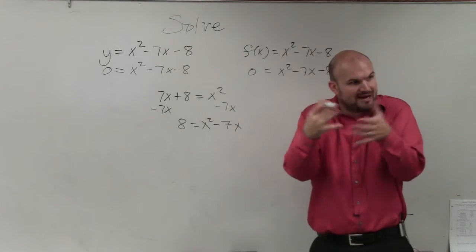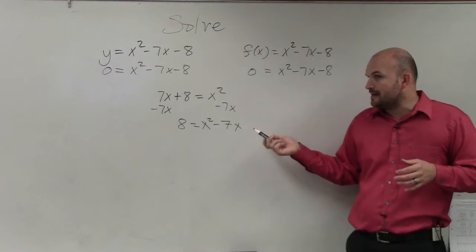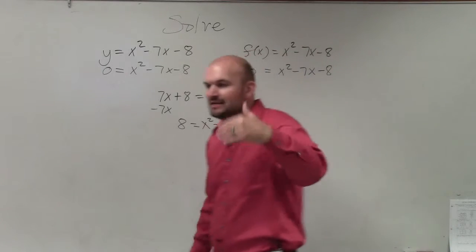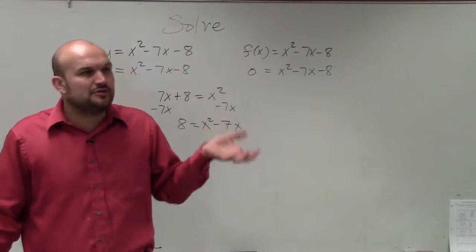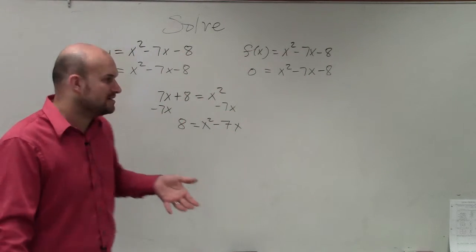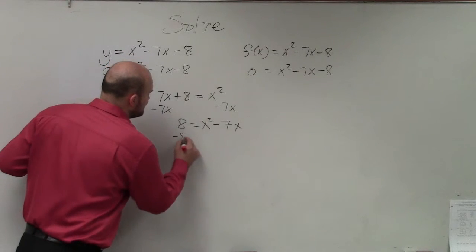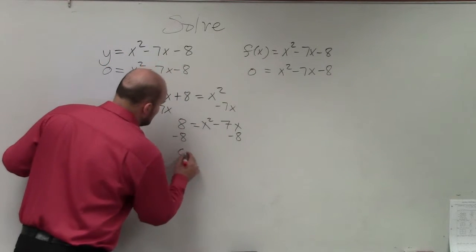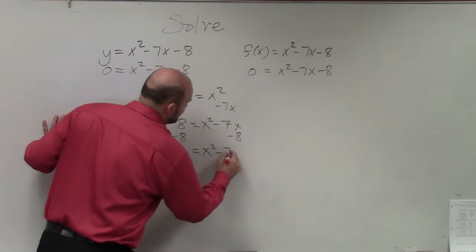In linear equations, they're all linear, so we combine them. Here, we can't combine them. So when we cannot combine them, we have more than one variable, we have to use factoring to help us solve. Well, to use factoring to help us solve, we have to apply the 0 product property.